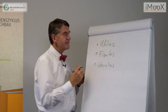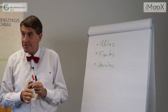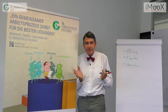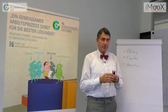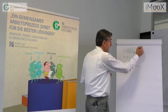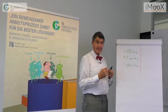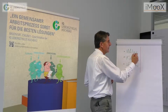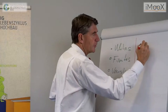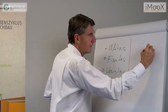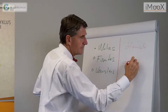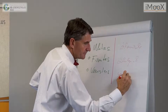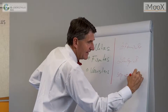Und das dritte heißt Venustas – ein Gebäude hat schön zu sein, ein Gebäude hat unser Herz und unser Leben zu erfreuen. Und, meine Damen und Herren, es hat 2000 Jahre gedauert, dass wir mit technokratisch-nordischen Begriffen plötzlich sagen: ökonomische, ökologische und soziokulturelle Nachhaltigkeit.